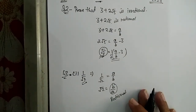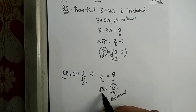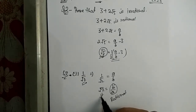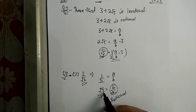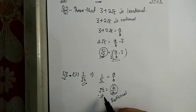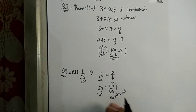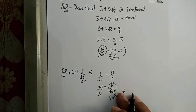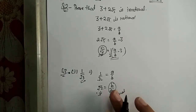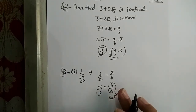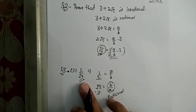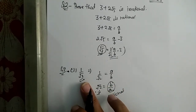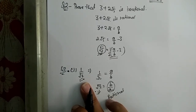Since a and b are integers, b/a is rational. Therefore, √2 would also be rational. But if the right-hand side is rational, then the left-hand side is rational too. However, this contradicts the fact that √2 is irrational. Therefore, our assumption is wrong and 1/√2 is an irrational number.